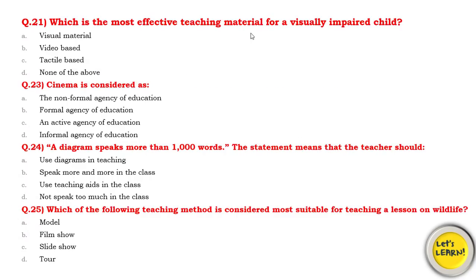Question number 21: Which is the most effective teaching material for a visually impaired child? For a visually impaired child, you cannot use video-based material. The most effective material is tactile-based — which means touch-based or sparshatmak. So you use tactile material, which allows them to understand through touch. Tactile-based material is the right answer for a visually impaired child.